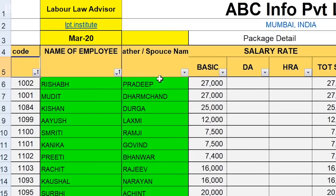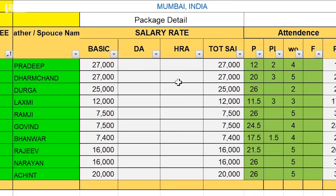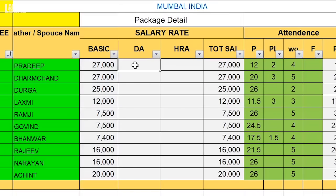After that, you have to mention the employee's name and father's name — both of them — so that if you have multiple employees with the same name in one company, you can differentiate them easily. Now, you have to mention the salary rate. Remember that this company has Basic, DA, and HRA as the three components. So first, the Basic is the employee's base salary.